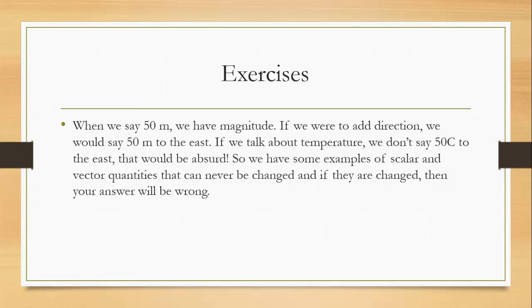Let's get into some exercises to help you understand. When we say 50 meters, we don't say 50 meters to the east. But when we say 50 meters to the east, we give direction, meaning it's a vector quantity. On the other hand, 50 meters is a scalar quantity.